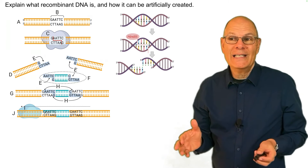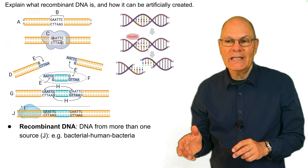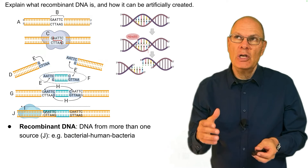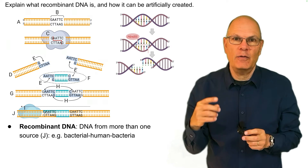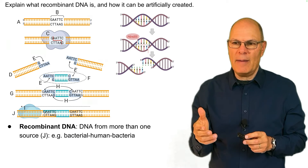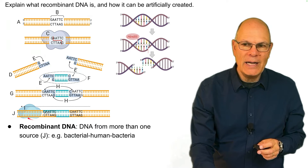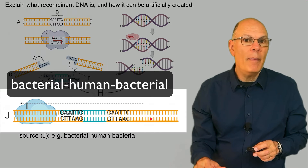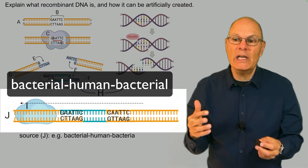Explain what recombinant DNA is and how it can be artificially created. Recombinant DNA is DNA that's been combined from more than one source. During meiosis, you would create recombinant DNA as you combined the DNA inherited from your parents in the form of new gametes. But this is artificial recombinant DNA — DNA from more than one source, such as bacterial DNA with a snippet of human DNA with more bacterial DNA.